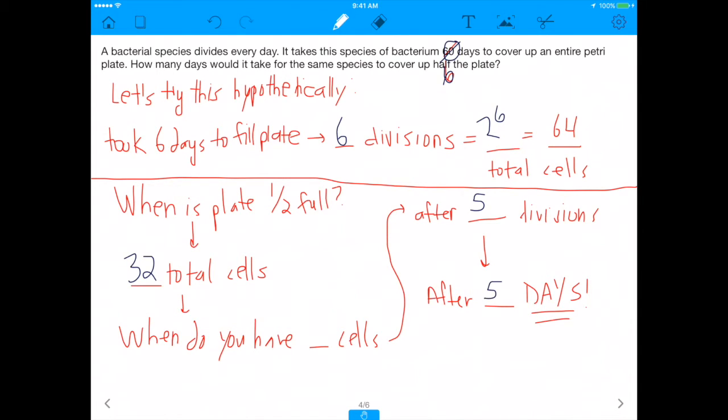So do you see how I just did this problem hypothetically? Initially, we had 60 days. There's no way you'd know how many cells there are in 60 days because you'd have to do 2 to the 60 days. So what I did was I broke that down and I said, let's just say it was 6. And let's say it was 6. What you'd have is 64 cells, and that would cover up the whole plate. And therefore, if you wanted half the plate to be covered, you'd need 32 cells. And the only time you have 32 cells is after 5 divisions, which means after 5 days.